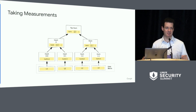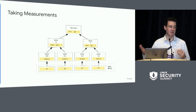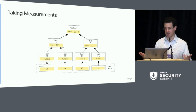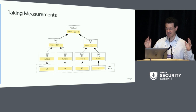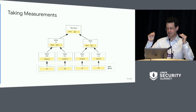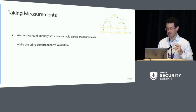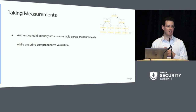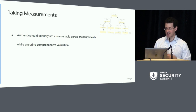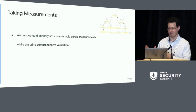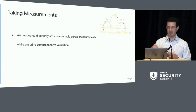An alternative to measuring the entire object all at once is to use an authenticated dictionary structure. There are several different structures that exist with various pros and cons. One of the common ones is a Merkle tree. With a Merkle tree, you segment what you're measuring into chunks, measure the individual chunks, and take measurements of measurements all the way up to some top level. This allows you to take a partial measurement while ensuring comprehensive validation, by doing a signature against the top level of the structure.